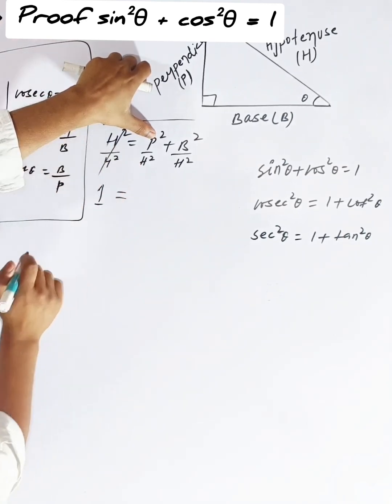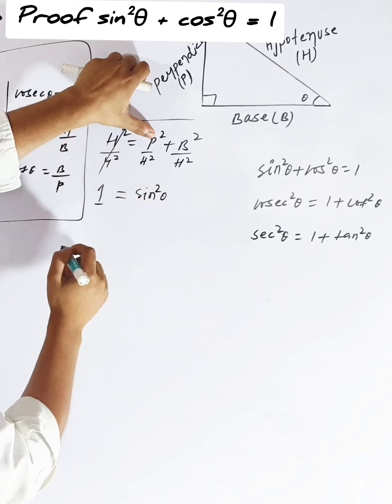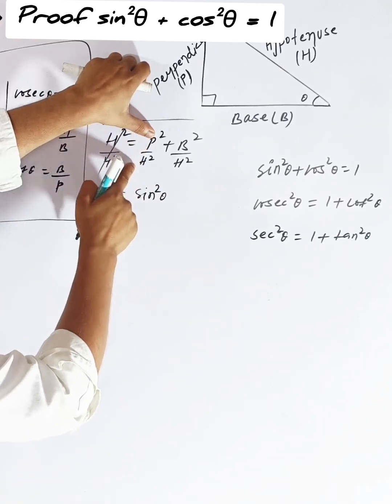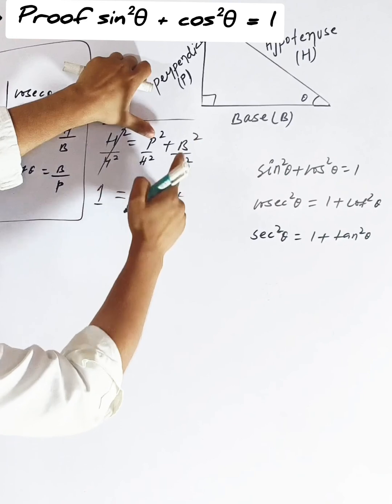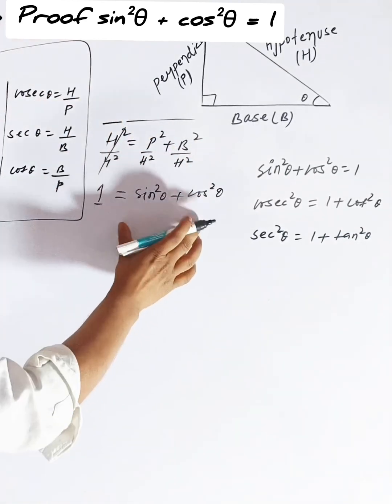Now see, what do we call p/h? Sine squared theta. Perpendicular upon hypotenuse is sine squared theta, plus base upon hypotenuse is cos squared theta. So this is our first formula.